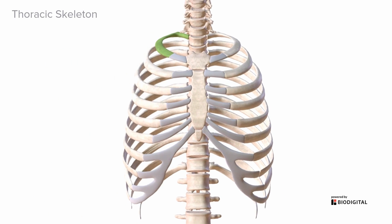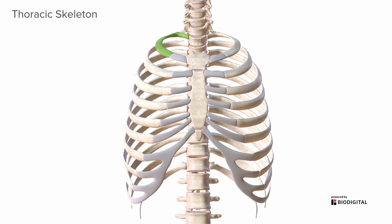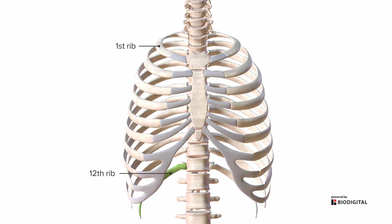Most people have 12 pairs of ribs, numbered from superior to inferior, 1 to 12. As they come around anteriorly towards the sternum, they transition from bone into cartilage, and we call these the costal cartilages.